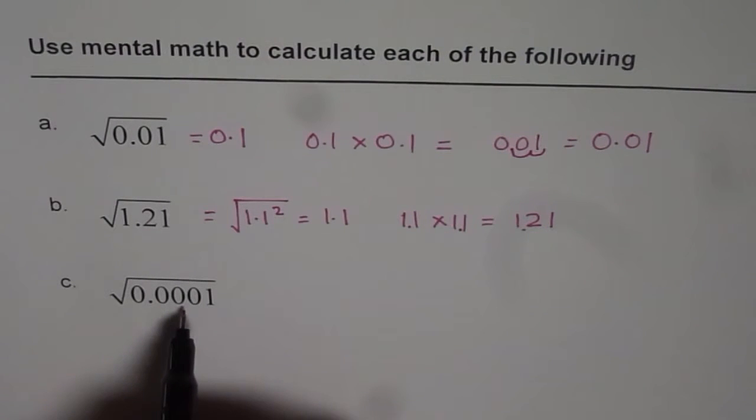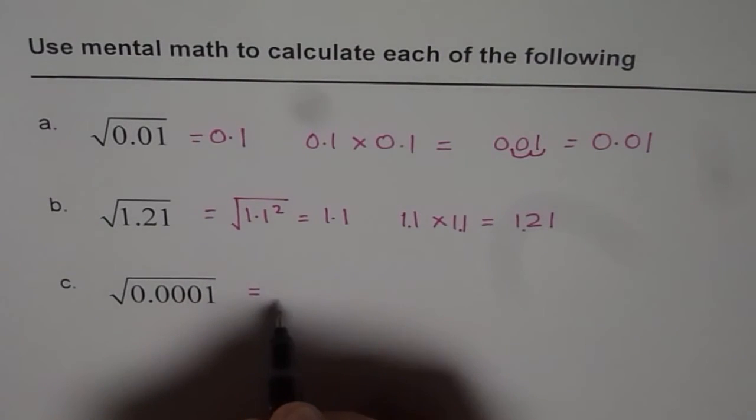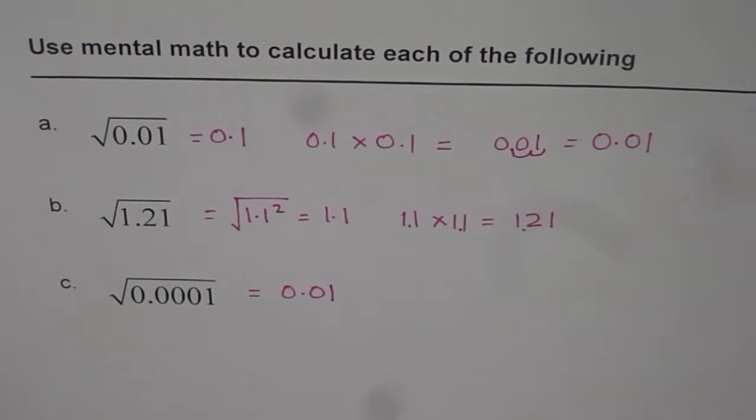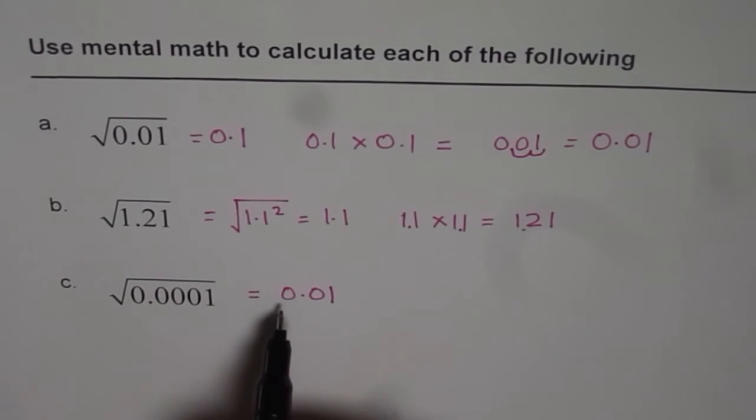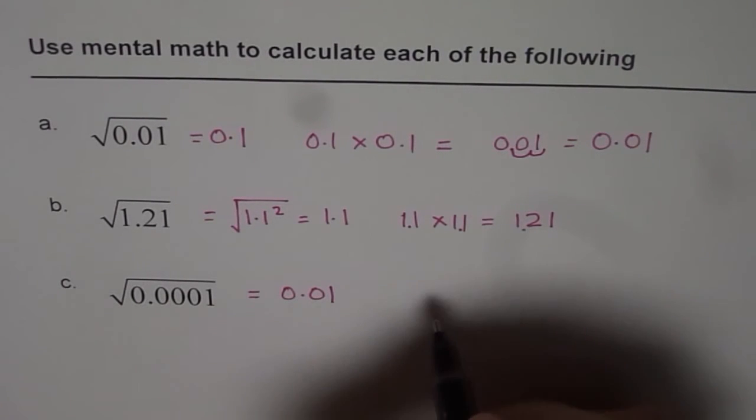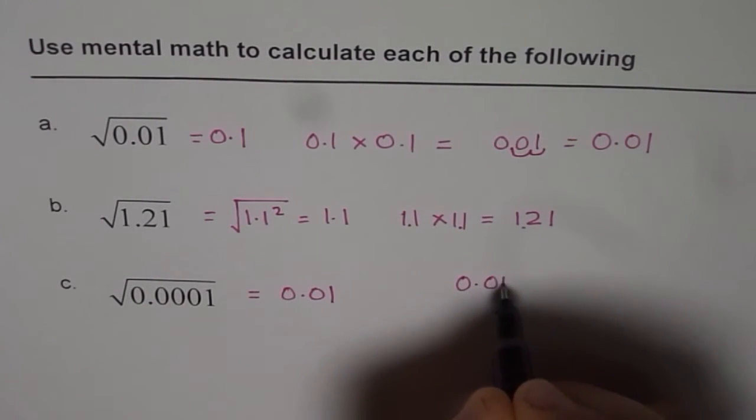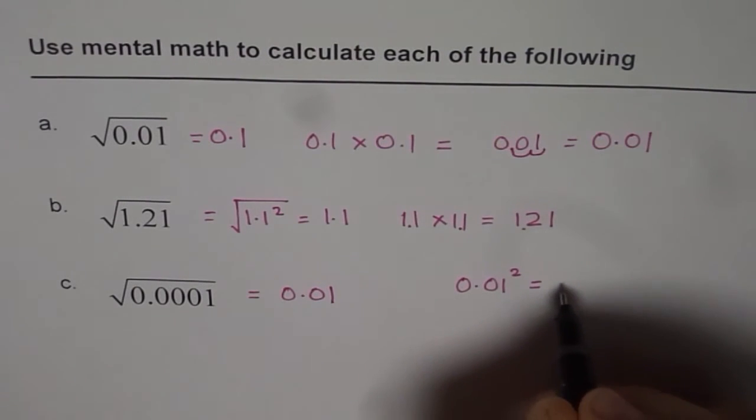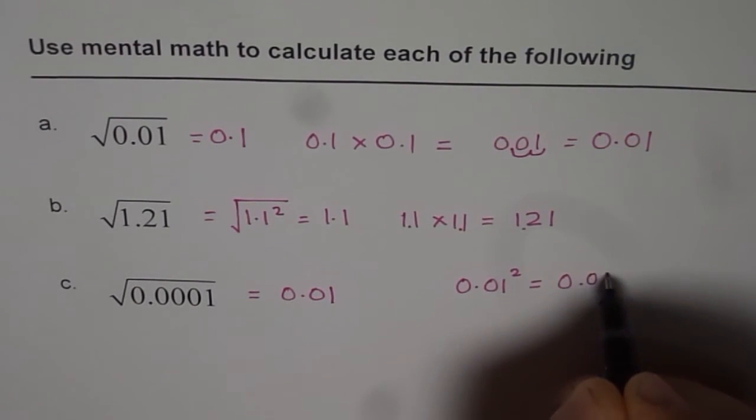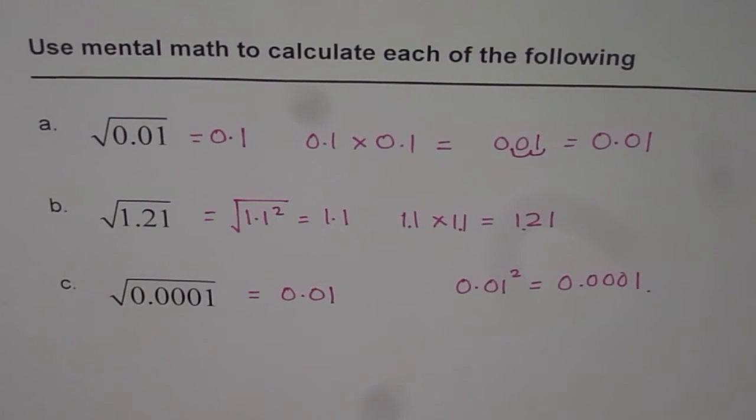Now in this case, we have the decimal after four places. And therefore, the answer should be 0.01. The square root of this is 0.01, since 0.01 squared equals 0.0001. That is how we can find the answer for square roots of decimal numbers.